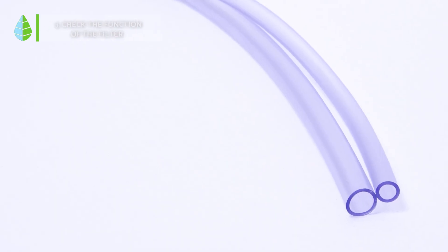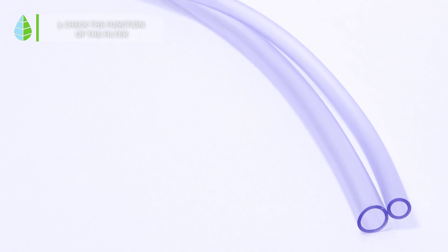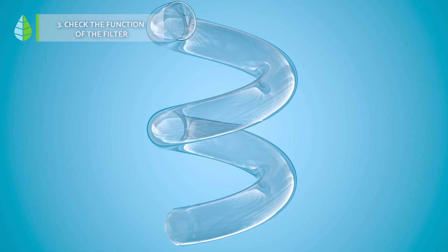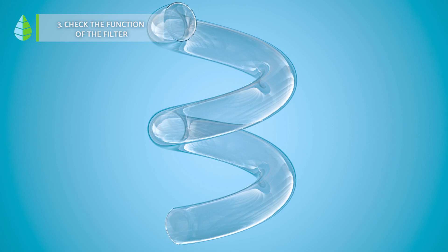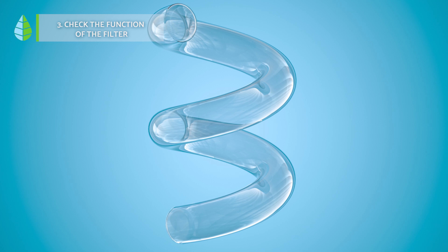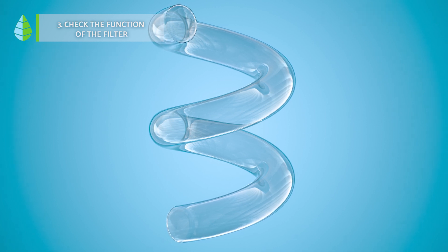Number three, check the function of the filter. A transparent tube can also be installed at the same height as the system outlet at the bottom to measure the volume of the water filter. If the volume of the water in the tube is the same as in the filter this will indicate that the manufacture of the filter is not adequate. While if the level is slightly lower it means that it's successful.